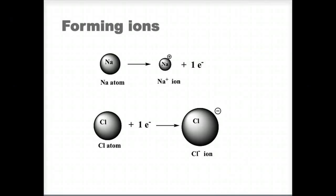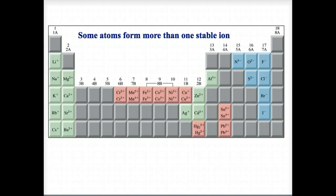Ions are formed when an atom loses or gains electrons. In a formula of an ionic compound, the number of positive charges equals the number of negative charges. Most atoms have only one stable ion, as seen in group 1 and group 2 metals or the halogens.